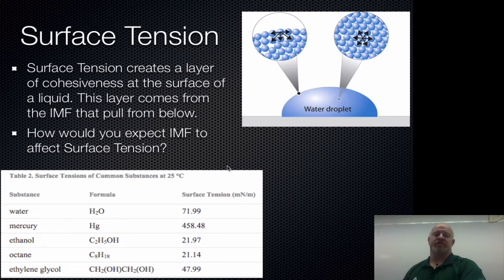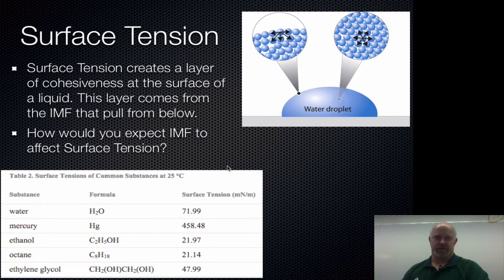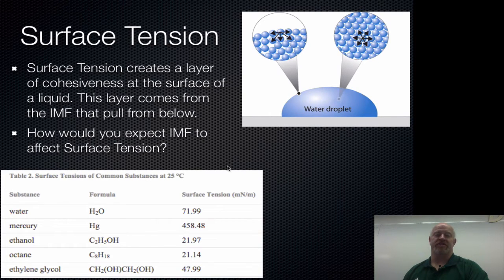The next thing we want to talk about is surface tension. Surface tension is basically this layer of cohesiveness or this kind of strong film on the surface of any liquid. Now depending on the internal electric forces that liquid has, it can be very weak or it can actually be very strong. Water tends to have a relatively strong surface tension in comparison to how small the actual molecule is.